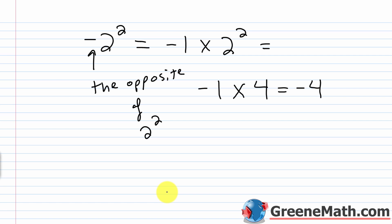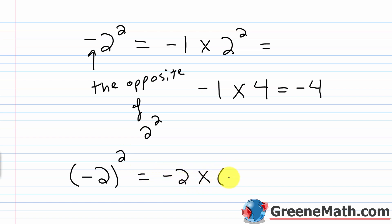To correctly write what your teacher asked for — negative 2 squared — you need to enclose negative 2 inside parentheses so that both the negative and the 2 are part of the base. So (-2)² equals negative 2 times negative 2, which equals positive 4. Go ahead and verify this on your calculator: put parentheses around the negative 2 and you will see an answer of 4.